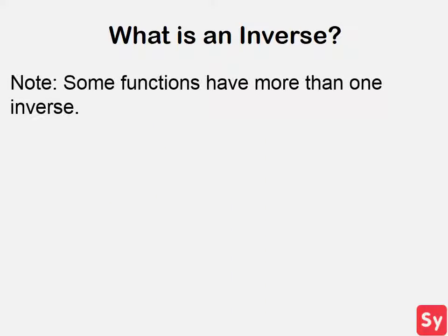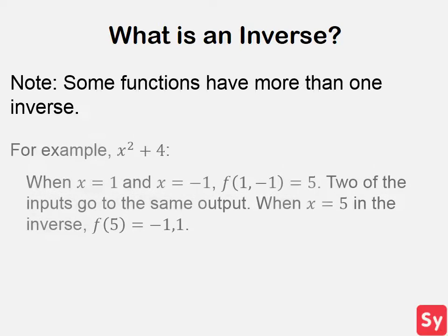It is important to note that some functions have more than one inverse. For example, if we have a function x squared plus 4, when we plug in 1 and negative 1 for x, we get the same output, 5. So for the inverse of this function, if we plug in 5 for x, then the inverse outputs two values, negative 1 and 1. So there are two inverses.